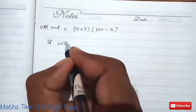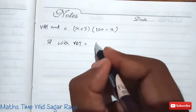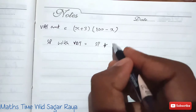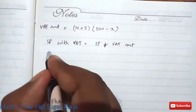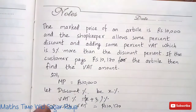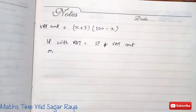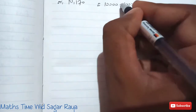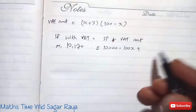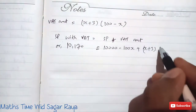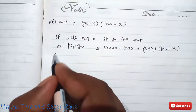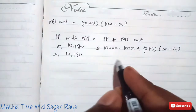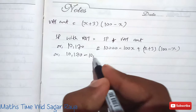Now we can write SP with VAT: that equals SP plus VAT amount. SP with VAT is already given in the question as 10,170. SP is 10,000 minus 100X and VAT amount is (X+3)(100 minus X), so: 10,170 equals (10,000 minus 100X) plus (X+3)(100 minus X).